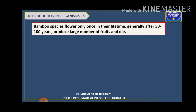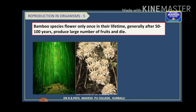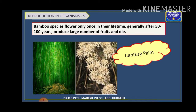There are also certain bamboo species that flower only once in their lifetime — generally after 50 to 100 years they flower, produce a large number of fruits, and then they die. The century palm is a common example; it is a bamboo species which flowers once in 50 to 100 years.